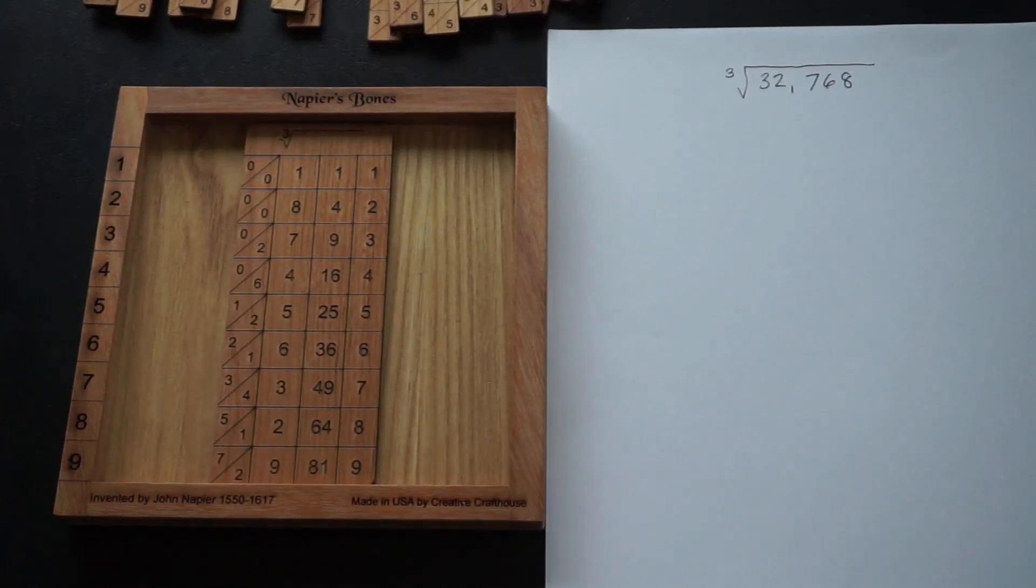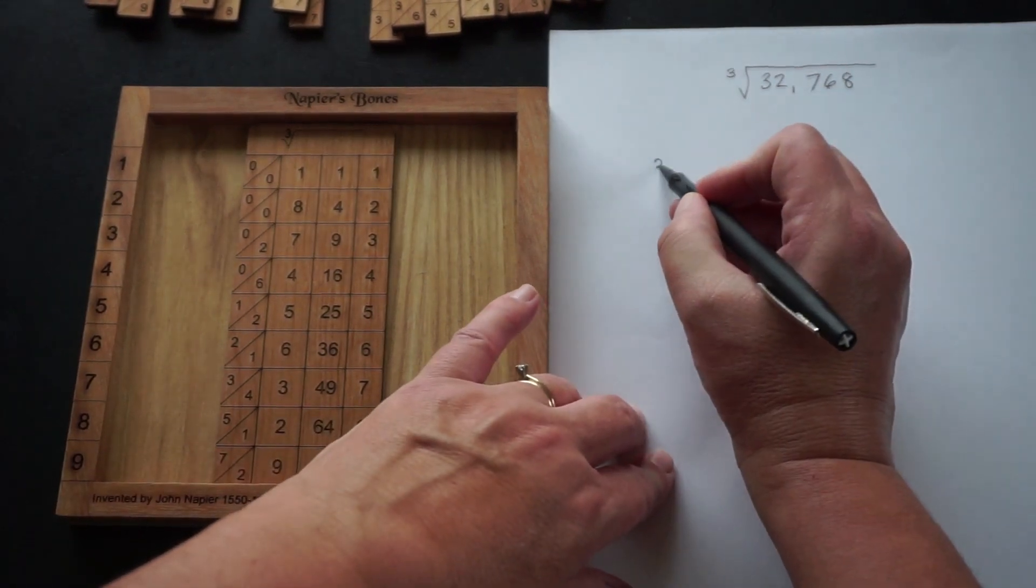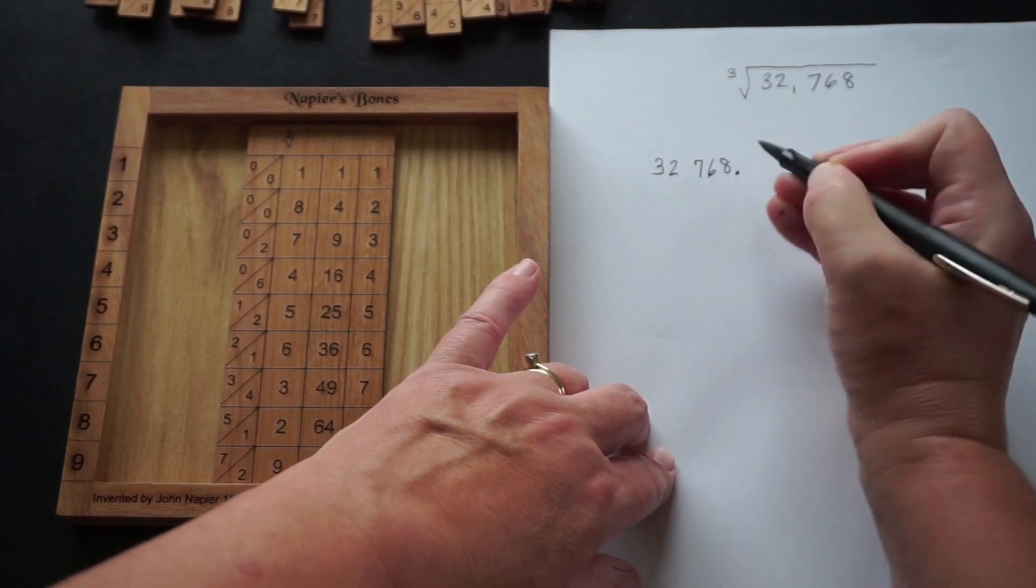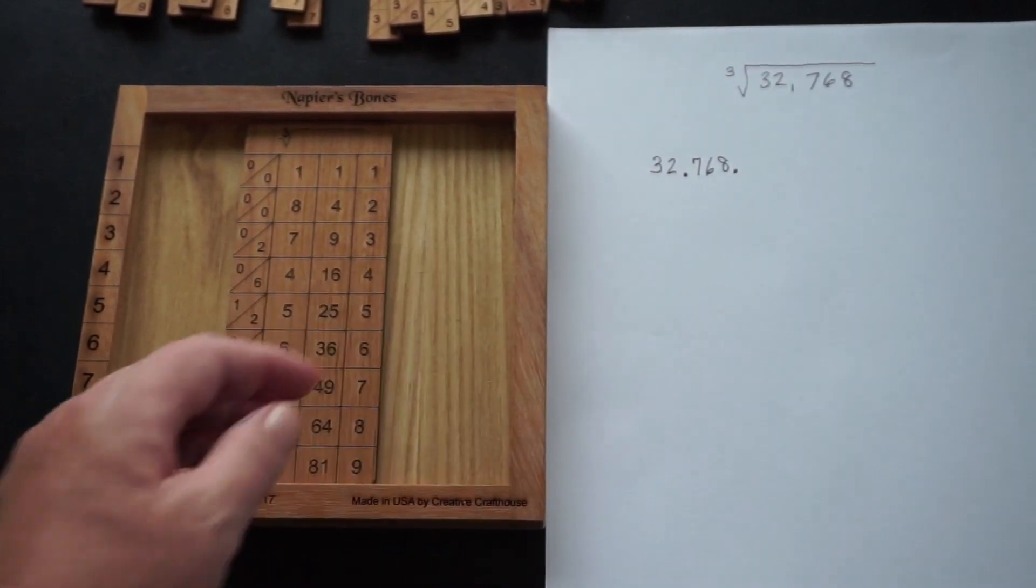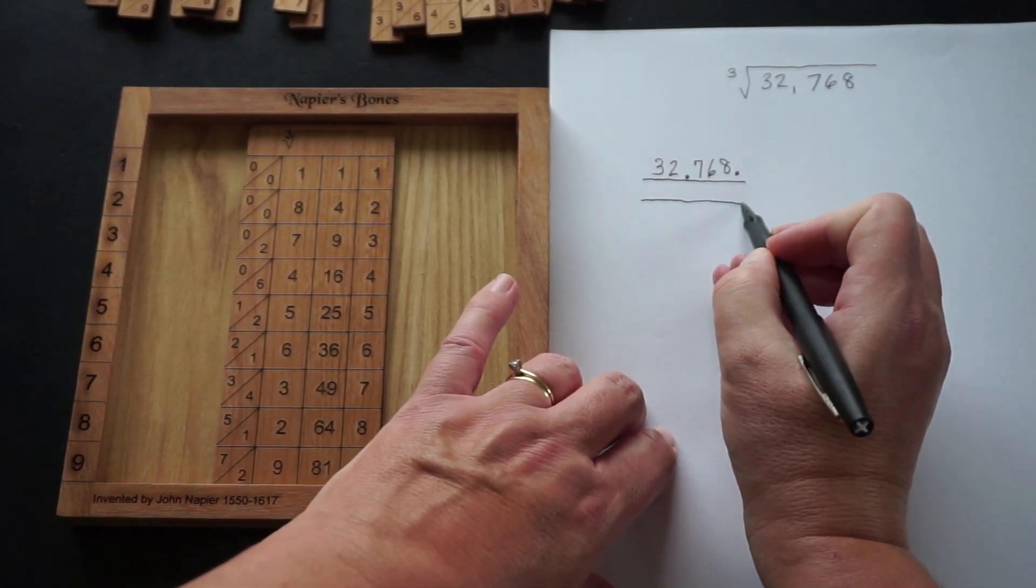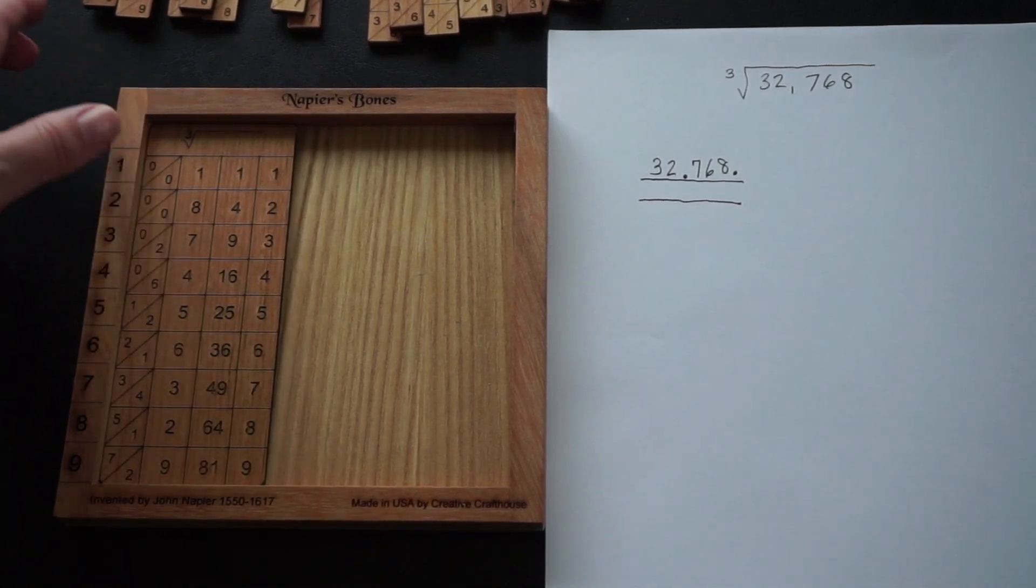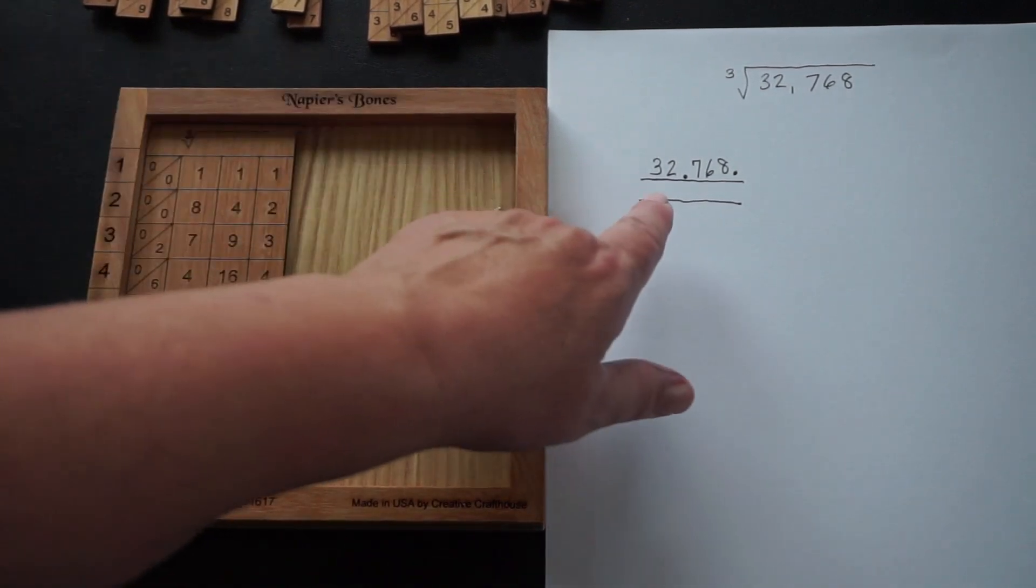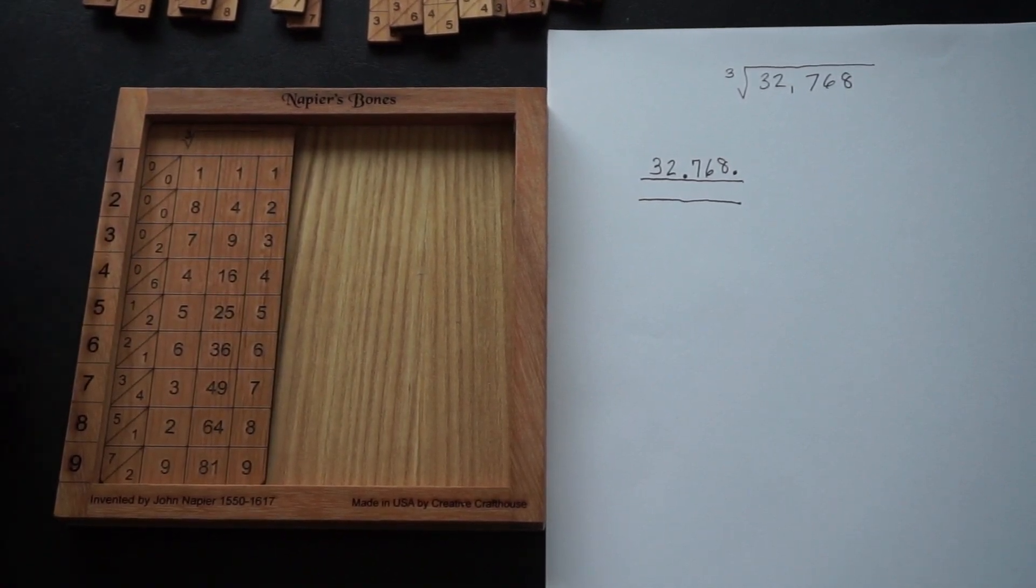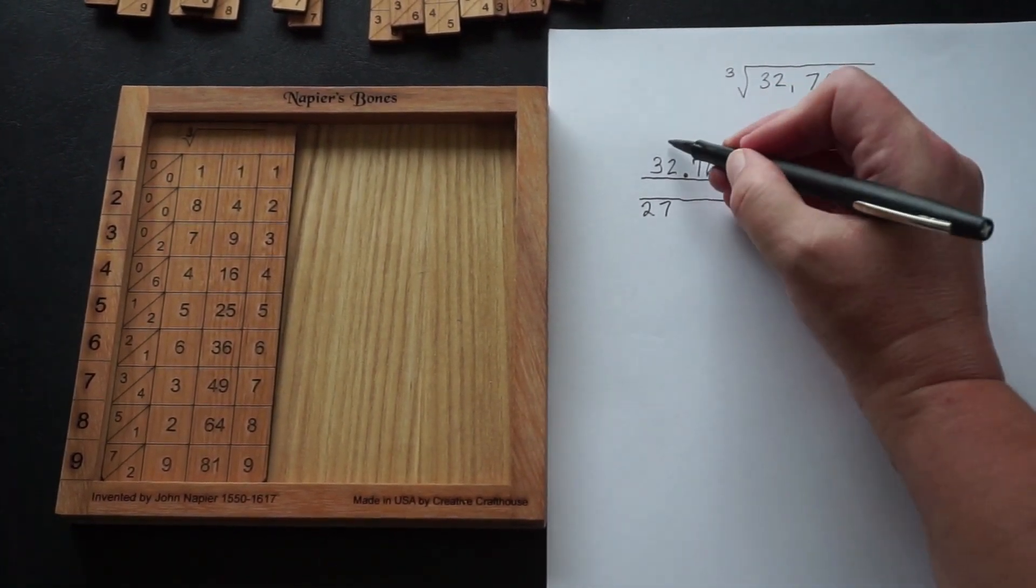For the cube root of 32768, we set this up so that we're splitting into triples. We create a space for our answer. We start out with just the cube root rod, looking for the perfect cube close to 32 without going over. That is 27, which is in row three. 32 minus 27 is 5.